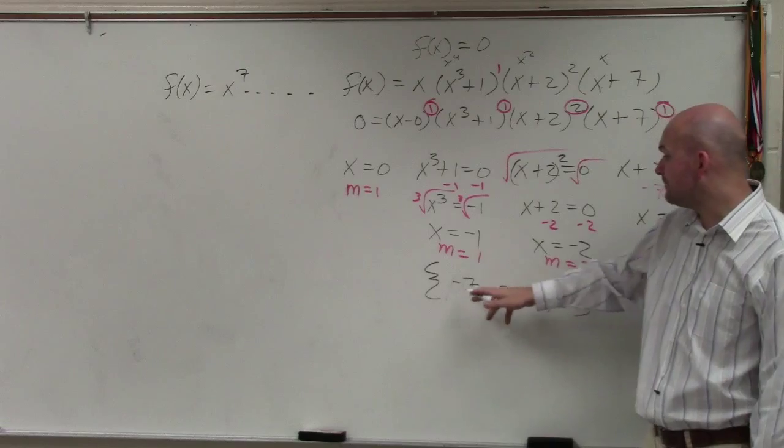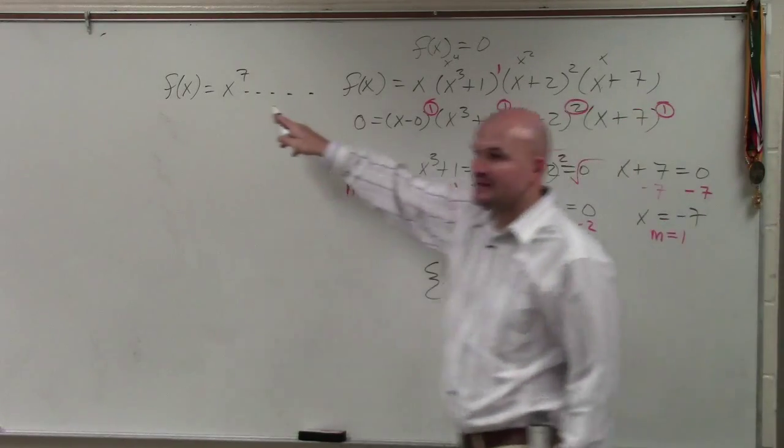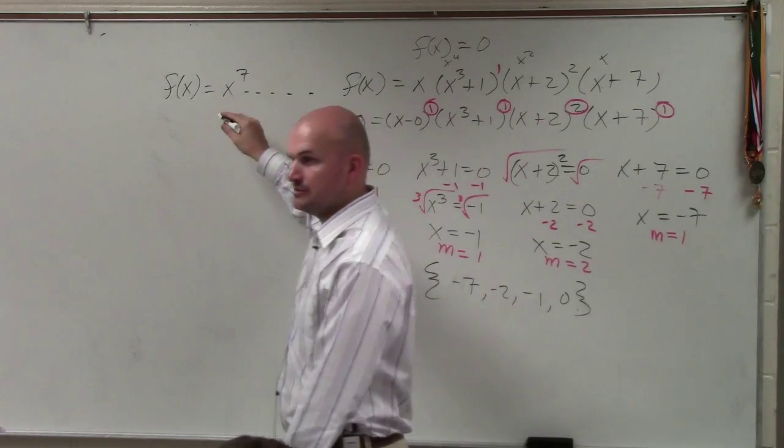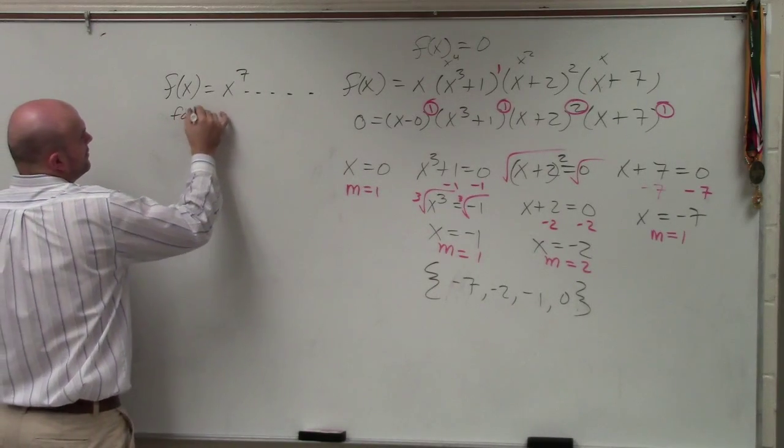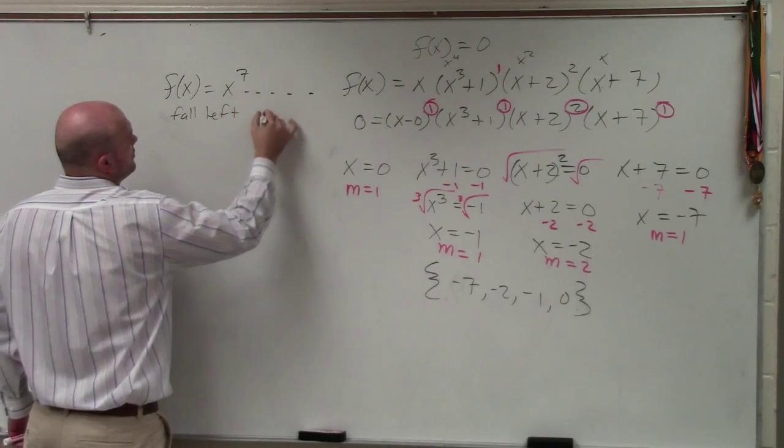So we have all these zeros. Can we find the end behavior from this information? Yes. Right. I'm not going to write it formally. I know that this is going to fall left, rise right.